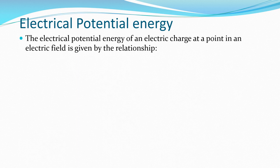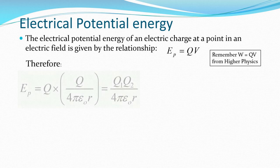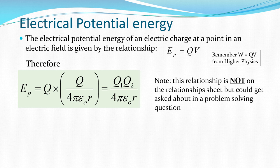Electrical potential energy. The electrical potential energy of an electric charge at a point in an electric field is given by EP equals QV, which we looked at at both national five and higher level. At higher physics, W (work done) equals QV. Therefore, EP equals Q multiplied by Q over four pi epsilon naught r (our potential), giving us Q1 Q2 over four pi epsilon naught r. Note this relationship is not on the relationship sheet but could be asked about in a problem solving question.